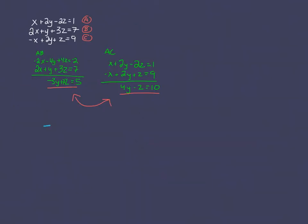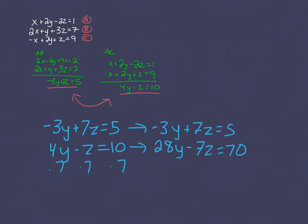I will now copy down my system, negative three Y plus seven Z equals five, and four Y minus Z equals ten, and I can use substitution or elimination to solve this. I'm going to choose elimination, which is also called linear combinations, and I will create an additive inverse for Z by multiplying the bottom equation by seven. Now I can continue the process by adding my equations together. I get twenty five Y equals seventy five, so Y equals three.